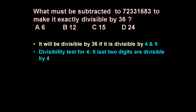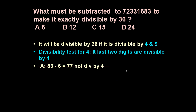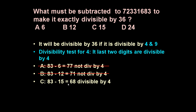To test divisibility by 4, we consider only the last 2 digits, which are 83. Subtracting option A (6): 83−6=77, not divisible by 4 — option A ruled out. Option B (12): 83−12=71, not divisible by 4 — option B ruled out. Option C (15): 83−15=68, which is divisible by 4 — option C may be correct. Option D (24): 83−24=59, not divisible by 4 — option D ruled out.